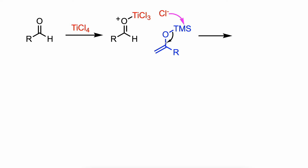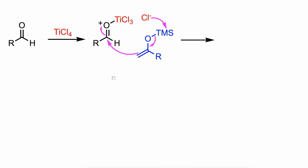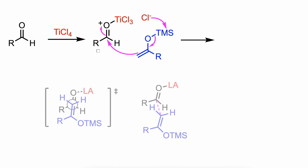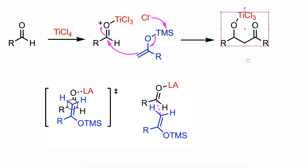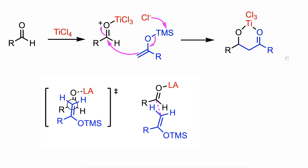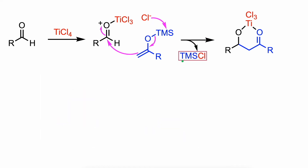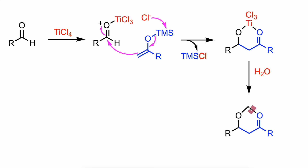Then carbon-carbon bond formation occurs between the allylsilane and the activated aldehyde, generating this transition state. Finally, a molecule of chlorosilane is lost and the final product is obtained as a racemic mixture upon aqueous workup.